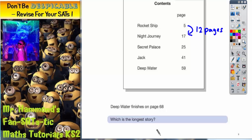Night journey starts on page 17 and the next story starts on page 25. So again if I find the gap, 25 take away 17 is 8. So that is 8 pages long. You can probably see where we go with this.